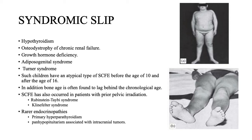In such cases you must rule out disorders and syndromes associated with slipped capital femoral epiphysis, including hypothyroidism, renal osteodystrophy, chronic renal failure, growth hormone deficiency, adiposogenital syndrome, and Turner syndrome. These types of syndromes can be associated with slipped femoral epiphysis and must be ruled out.